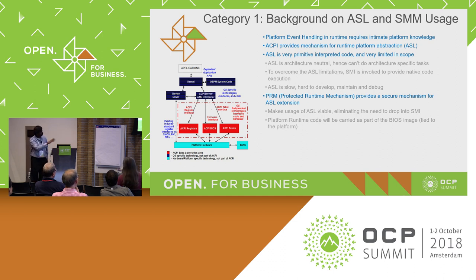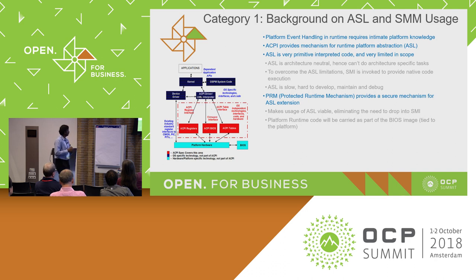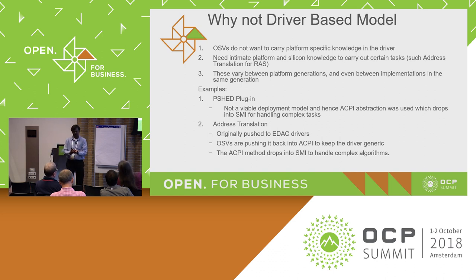I'll touch upon PRM briefly. This is the mechanism we're proposing so that from ASL context we can call into C code at ring 0 — at the same privilege level the ASL code runs — without going into SMM at all, and still accomplish the same things. You might ask: why not do it in a driver directly? The problem is a lot of these things are highly tied to the platform.